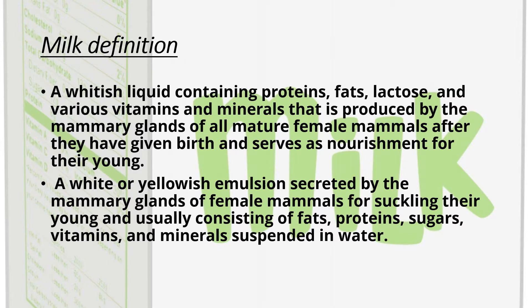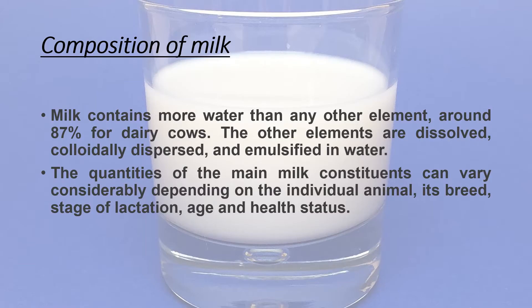A white or yellowish emulsion secreted by the mammary gland of female mammals for suckling their young and usually consisting of fats, proteins, useful sugars, vitamins and minerals suspended in water. So, let's talk about the composition of milk.